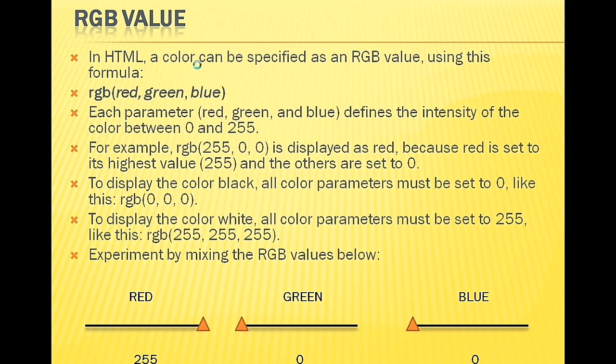For black color, all RGB parameters must be set to 0 - so the RGB value is (0, 0, 0). For white color, all parameters must be set to 255 - RGB value is (255, 255, 255). With these RGB values we can experiment with many colors.